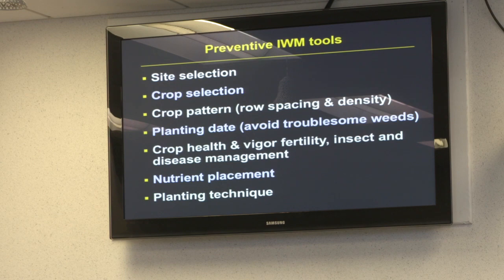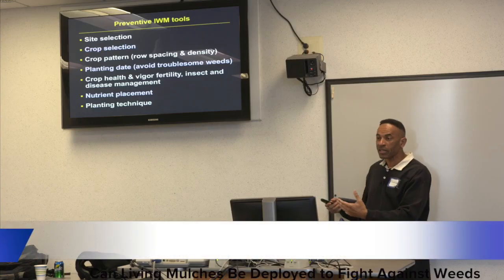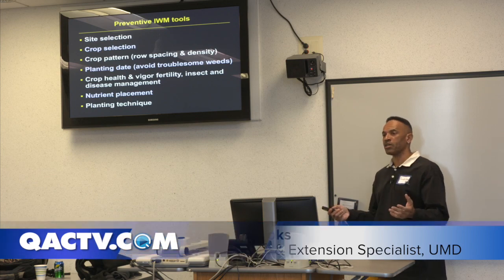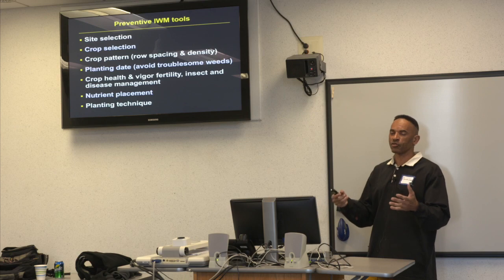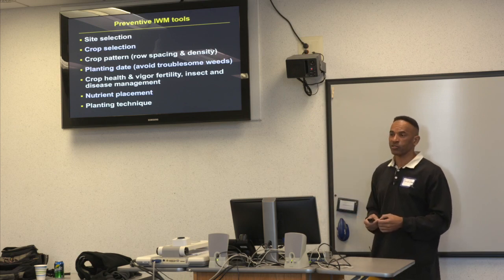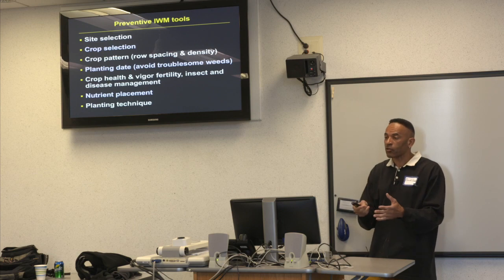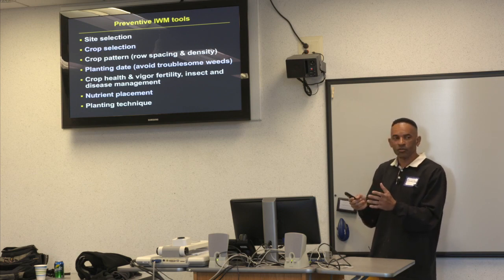Planting date can help avoid troublesome weeds. If you know the field history and when troublesome weeds typically emerge, you can plant before that flush to close the canopy, or till out those weeds before planting. Crop health and vigor are also important — a vigorous crop competes better with weeds. If the crop has additional stresses, such as insect pressure below economic threshold, it still won't compete as well, so you want all health-related issues addressed.